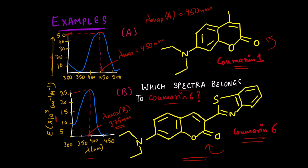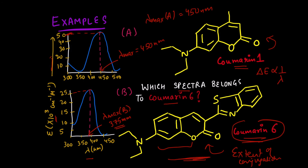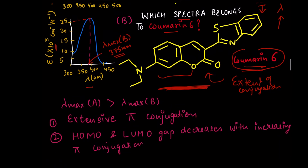Absorbance depends on many factors. The first is the extent of conjugation, which changes the energy gap between HOMO and LUMO. Coumarin 6 has more extensive conjugation. Since ΔE is inversely related to lambda, the energy difference for a more conjugated molecule is smaller, which means the wavelength is larger. Therefore, spectrum A — with the higher lambda max — belongs to coumarin 6.